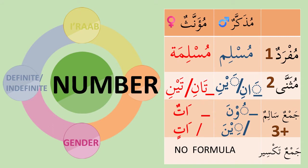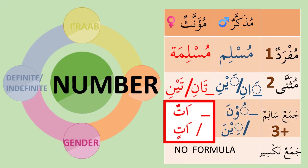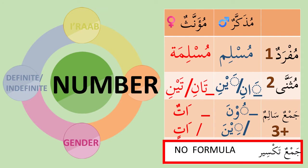As for the plural or jama' of isim, there are three types. The first is jama' muzakkar salim, identifiable because they end with -una or -ina. The second is jama' mu'annas salim, recognizable because they end with -atun or -atin. The third is jama' taksir or broken plurals, which is tricky because the word structure does not conform to any obvious formula — it looks just like a singular isim mufrod. You can only tell it's a jama' taksir by referring to a dictionary.